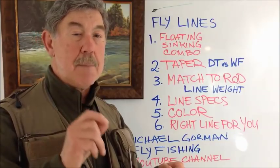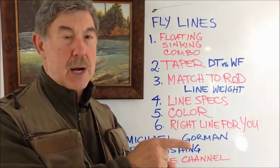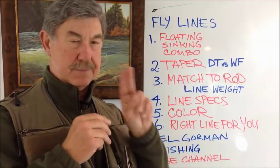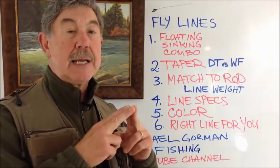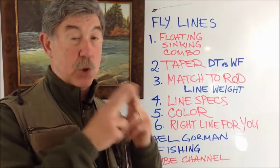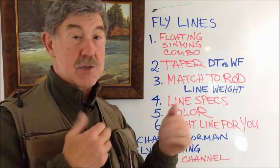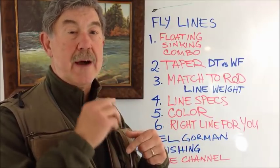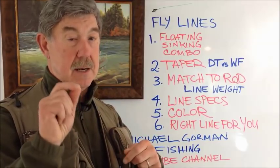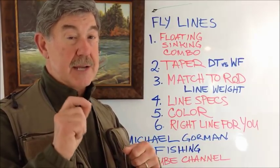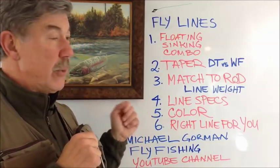On the fly line box, look for the number that matches your rod. The third piece of code on the box tells you whether it's a floating line — indicated by an F — a sinking fly line indicated by S, or a combination shown as F/S. Match that fly line to the rod you're going to cast it on.